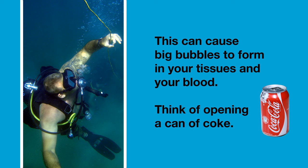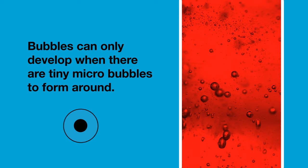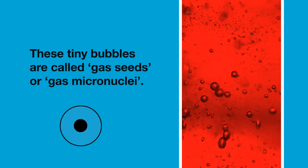You can think about opening a can of Coke and bubbles forming in the liquid. But it's not quite as simple as that. Bubbles can only develop when there are tiny micro bubbles in the liquid, such as your blood, to form around. These tiny micro bubbles are called gas micronuclei, or gas seeds.